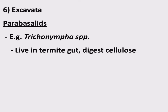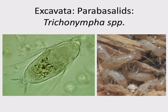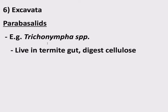Trichonympha lives in the gut of the termite and digests cellulose. This is the power behind the termite — we're going to see this in later chapters when we talk about the digestive system. No animal can really digest cellulose, can really break down leaves or grass or wood. Any animal that makes its living eating that sort of plant matter — whether it's a cow, a rabbit, or a termite — has to have some partner actually breaking down the cellulose for them. In this case, the termites are using these Trichonympha spp. in their gut to digest the cellulose and plant matter they are consuming.